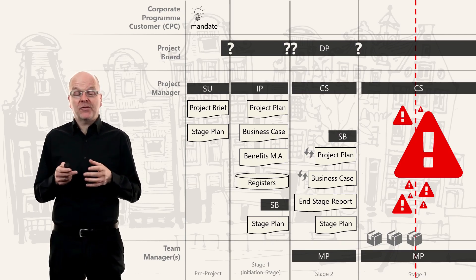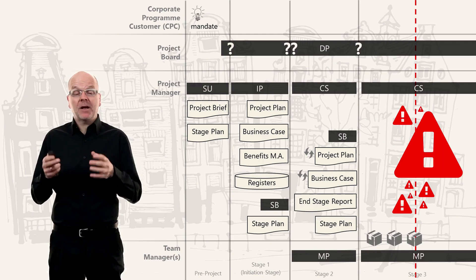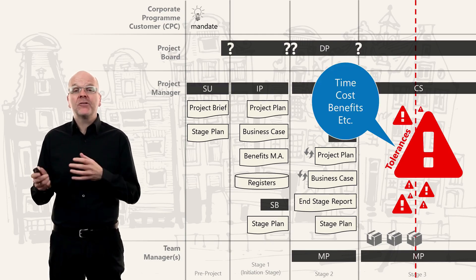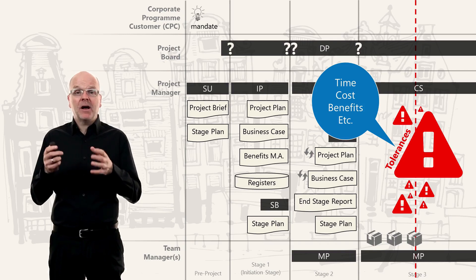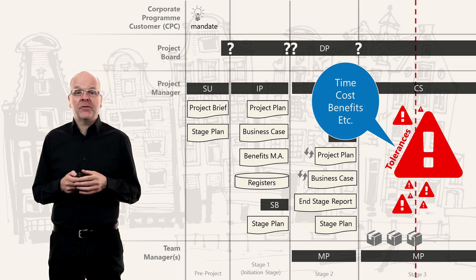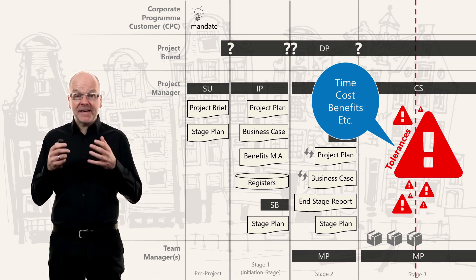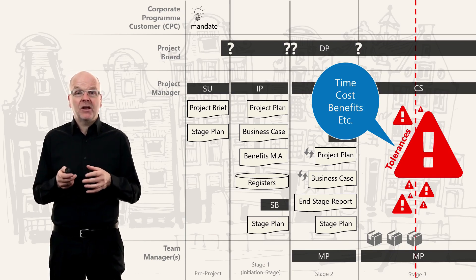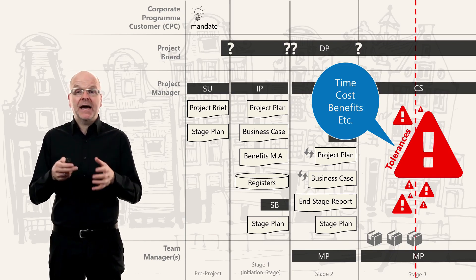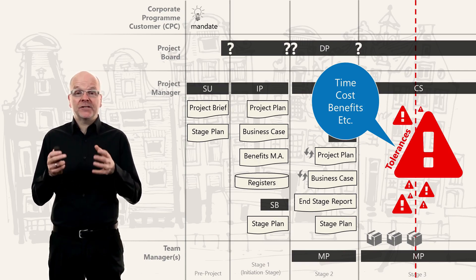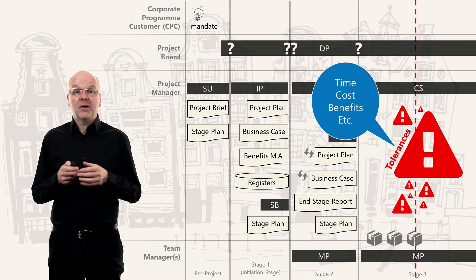We have tolerances for time, costs, and benefits — there are three more as well, but these are much less common. The project board will set tolerances for the stage for time, costs, and benefits. For example, they can set a cost tolerance of 10 percent.